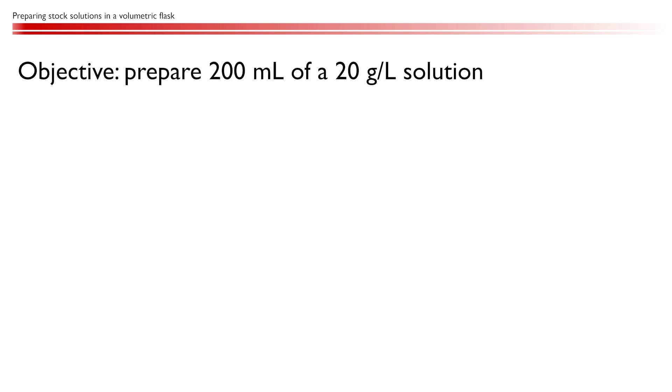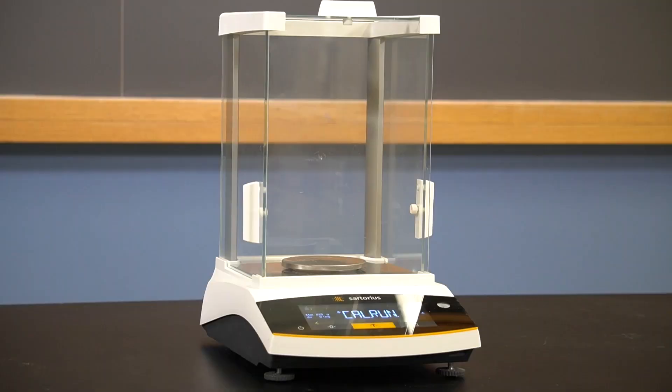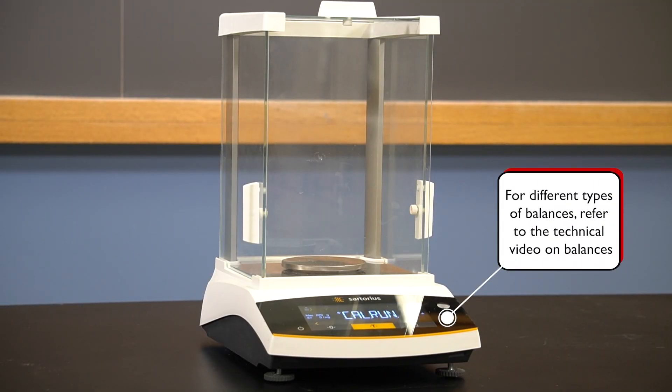The first thing we need to do is pick the right equipment for the job. When preparing a stock solution, our goal is to know the precise concentration of the solution. So we'll use a good balance, meaning an analytical balance, to measure the mass of the solute precisely.